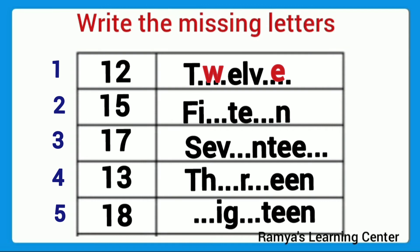For 15, the first missing letter is F, then the next letter is E. Next number is 17: S-E-V-E-N-T-E-E-N. The first missing letter is E, and the last missing letter is N. Then next number is 13: spell 13 — T-H-I-R-T-E-E-N.